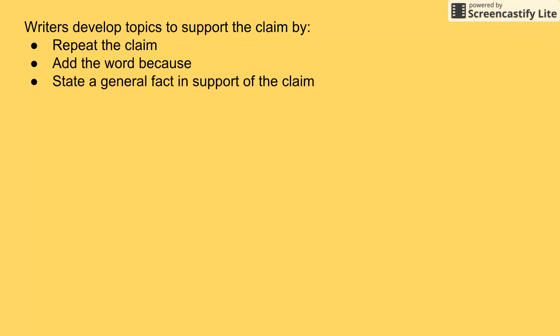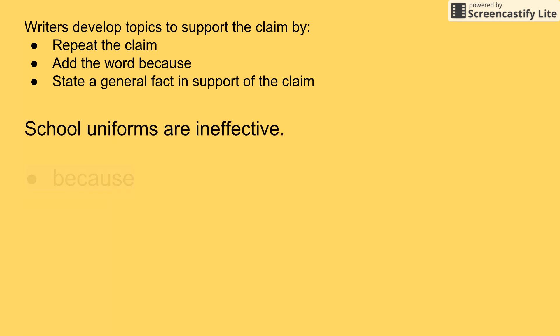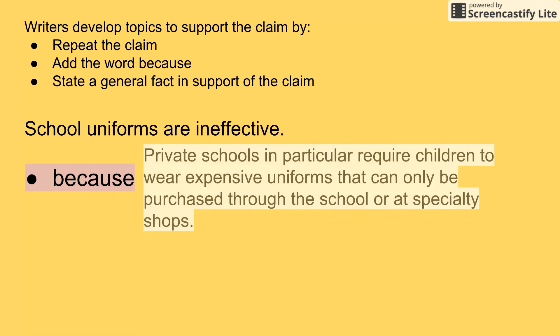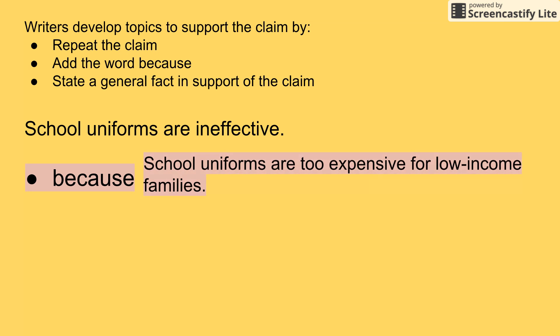Writers develop topic sentences to support the claim by repeating the claim, adding the word 'because,' and stating a general fact in support of the claim. For example: school uniforms are ineffective because private schools in particular require children to wear expensive uniforms that can only be purchased through the school or at specialty shops. I know cost is a problem, but this is too specific. A more general statement would be: school uniforms are too expensive for low-income families — and then I'll be able to find three facts to prove this.